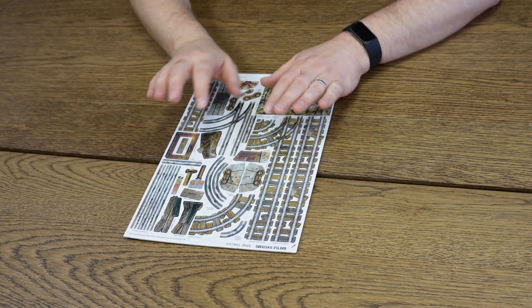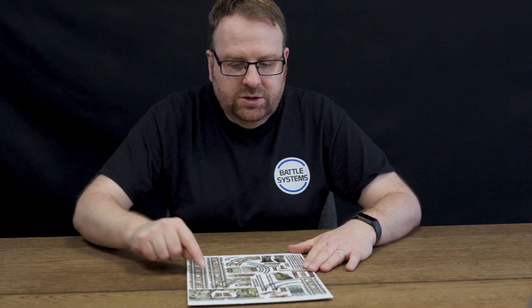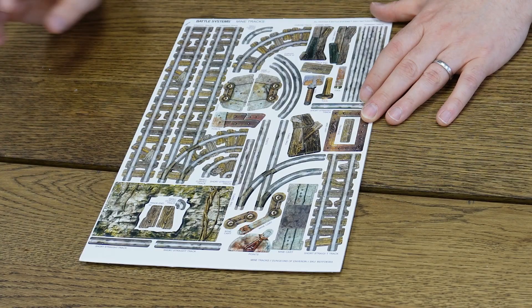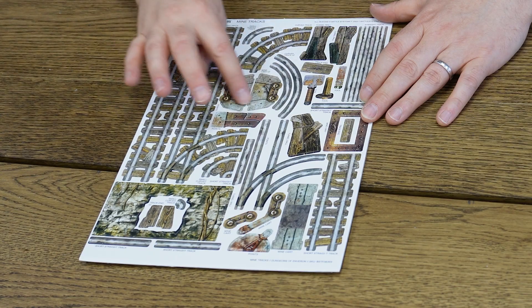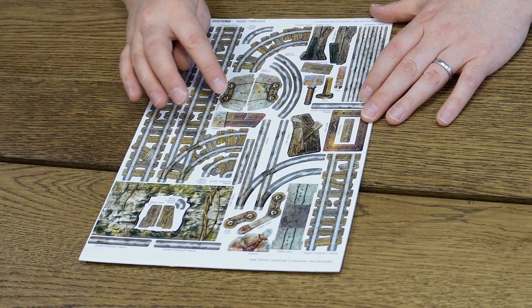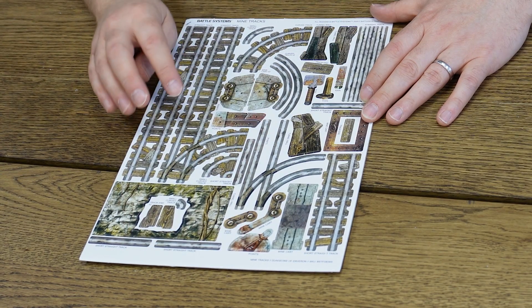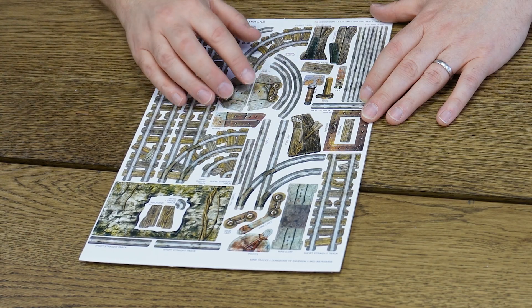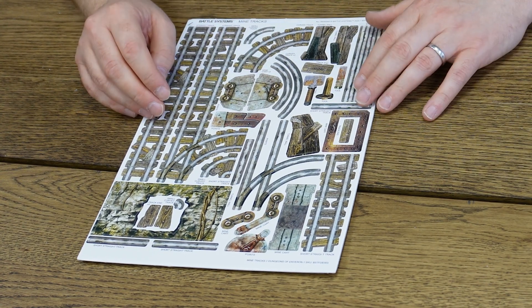Let's start with the heart of this set, which is the mine tracks. You've got some tracks, you've got a bit of wall that you can use as an entrance for the mine carts to run in and out of, you've got some mine carts, some points, and obviously these mine carts could form a really interesting part of your adventure, perhaps using it to transport some valuable items or maybe even your adventurers themselves. We'll just pop those out and take a look at them.